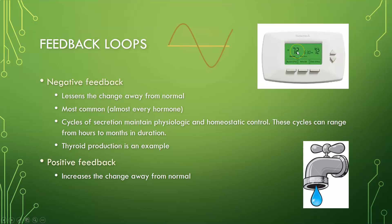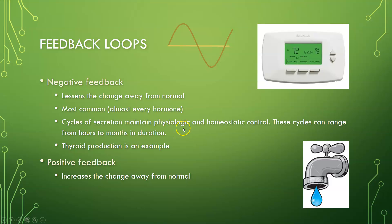Negative feedback loops are very much akin to thermostats. If you set it at 72°F, in summer when the house gets hot, the AC kicks in and brings the temperature back down to 72. In winter, when the temperature drops, the heat kicks in and brings it back up to 72. Similarly, many hormones are controlled by this pattern, creating cycles of secretion that maintain homeostatic control — ranging from hours to months in duration. Thyroid production is a classic example.